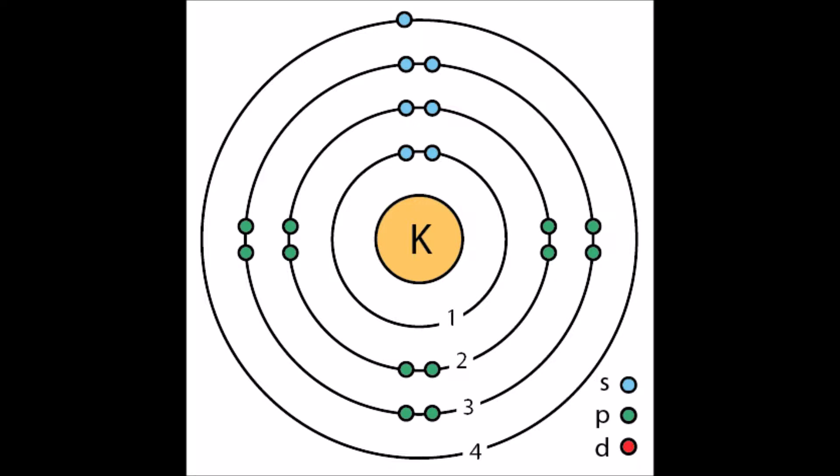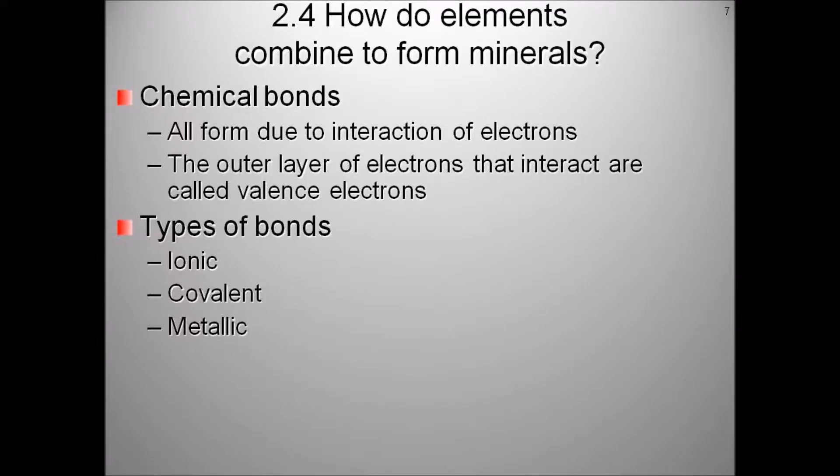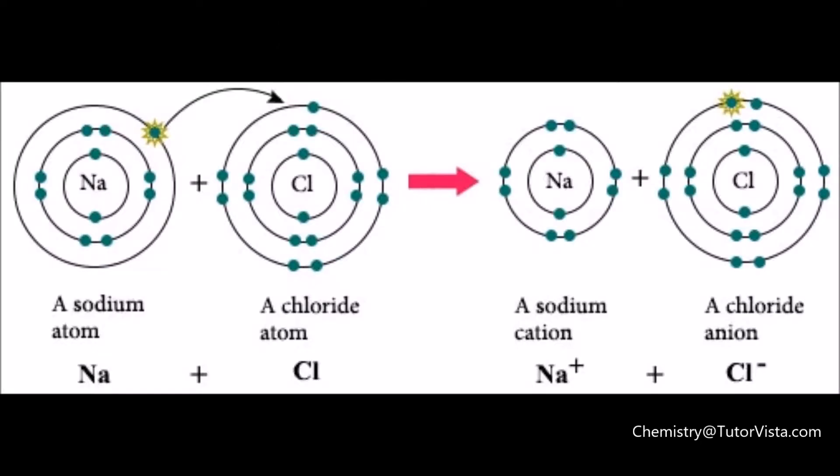There are three types of chemical bonds: ionic, covalent, and metallic. The weakest bond is ionic, in which one atom steals an electron from the outer shell of another atom to fill its own outer shell. This creates a weak magnetic attraction between the atoms and holds them together, but these bonds are easily broken. An example of an ionic bonded mineral is halite, or table salt. Water tugging on the halite atoms can easily break the bonded ions apart.